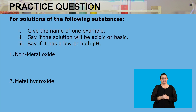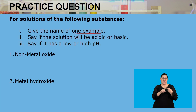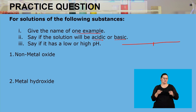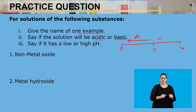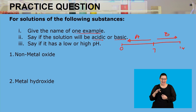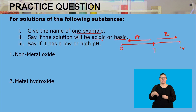Next question: for solutions of the following substances, give the name of one example, say whether the solution will be acidic or basic, and say if it has a low or high pH. The pH scale runs from 0 to 14, with 7 being neutral. Less than 7 is acidic; greater than 7 is basic. A high pH means a basic substance; a low pH means acidic. The stronger the acid, the closer to 0; the strongest base has a pH of 14.